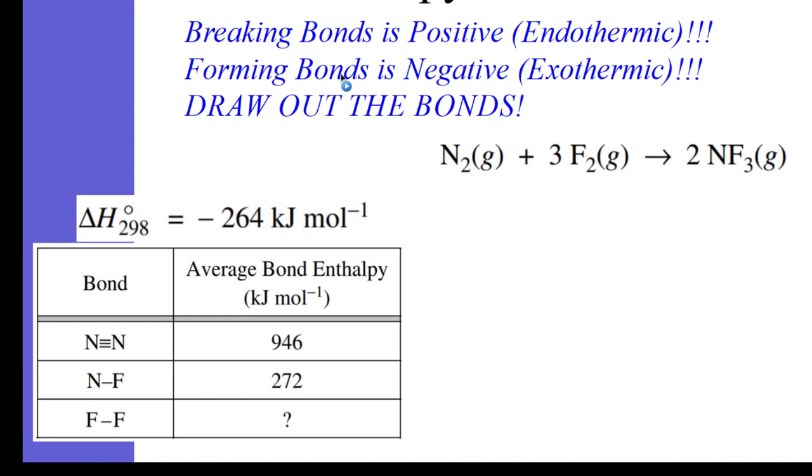Here we have, of course, we've got bond enthalpies. So what are we going to do? We know the delta H of this reaction, the enthalpy of the reaction, is negative 264 kilojoules per mole, and this reaction, we want to draw out the bonds.